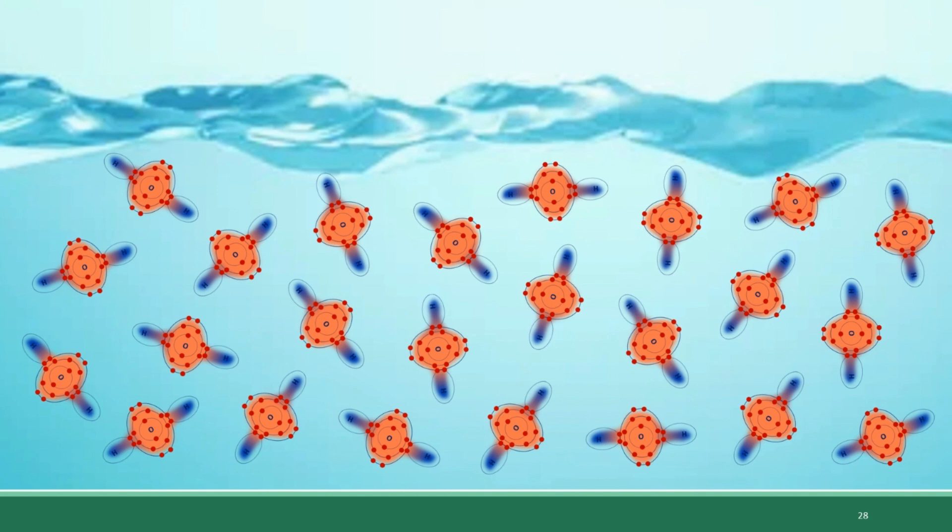When you have a collection of water molecules, the positive ends of one molecule are attracted to the negative ends of other molecules. These yellow dotted lines represent this network of attractions between separate water molecules. The water molecules want to stick to each other as a semi-cohesive unit. This arises from them being polar molecules—if they were non-polar, those attractions wouldn't exist.